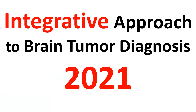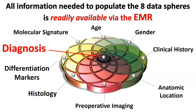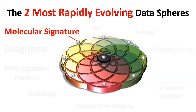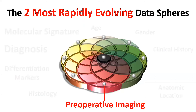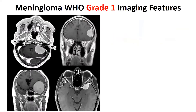I think the slides show the goals of the diagnostic medicine physician to populate all of these spheres, and if we do that, a diagnosis will be specific. All of the information we need is available in the electronic medical record. The most evolving data spheres are definitely molecular signature and preoperative imaging. With that overview, let's look at the information. First point: imaging is pathology. Diagnosis is not with histology — it's with preoperative imaging. Let's look at the imaging elements.